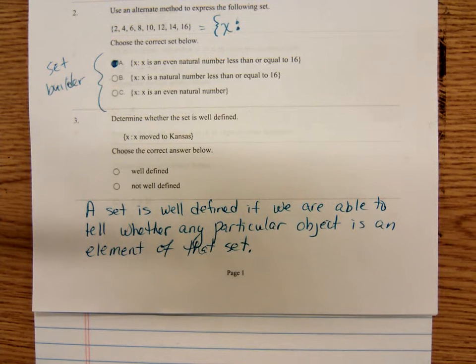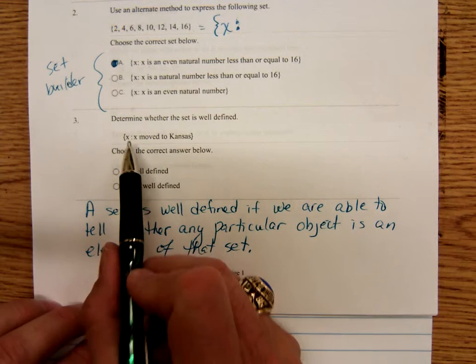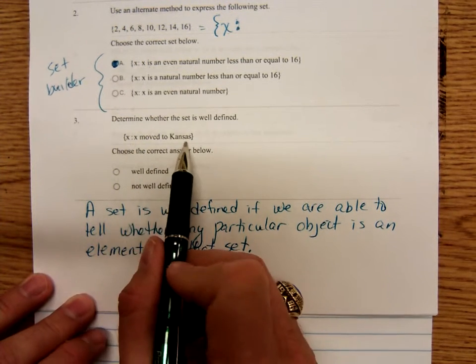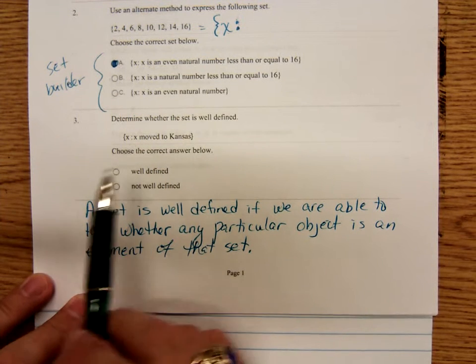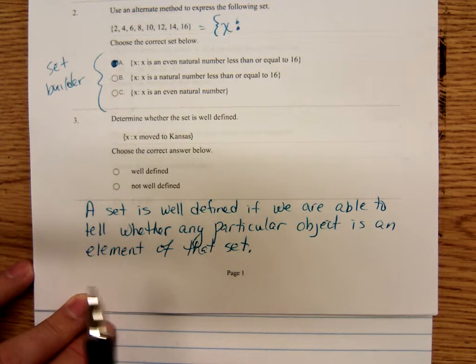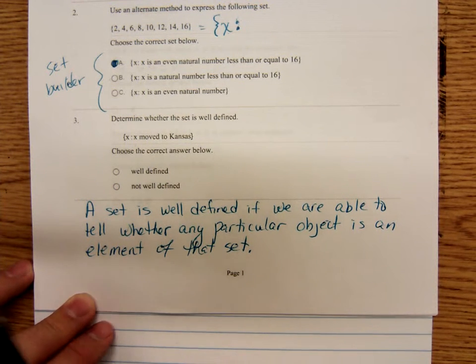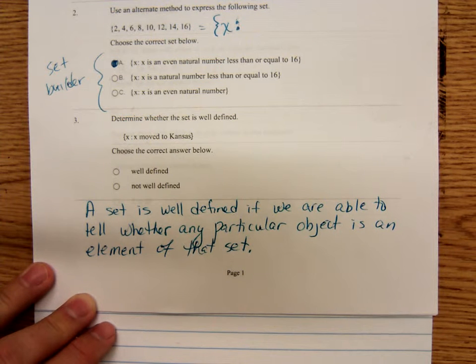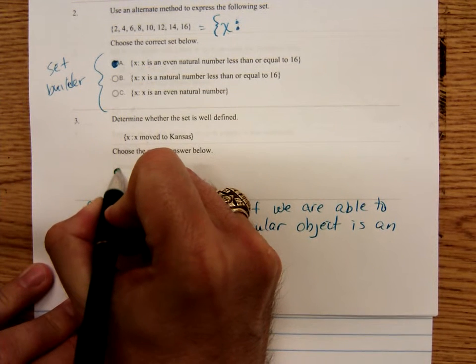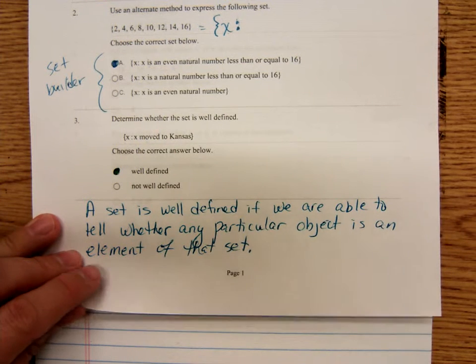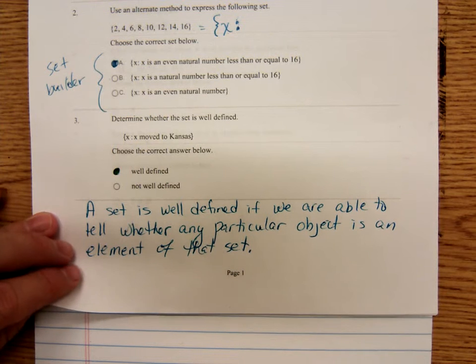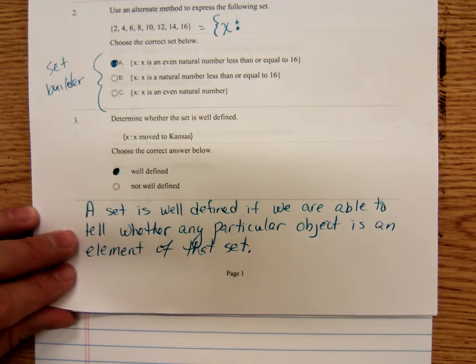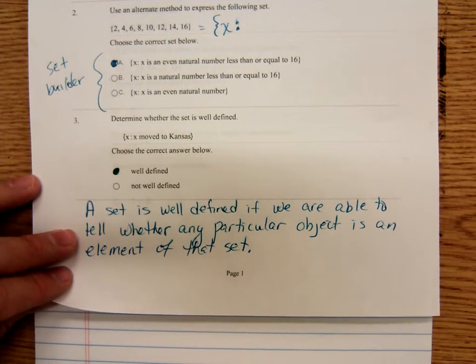So, number three, determine whether this set is well defined. The set of all X such that X moved to Kansas. I guess it sounds like it's talking about people. Well, if you chose any person in particular, could you decide did they move? Are they in this set or not? Did they move to Kansas or not? Well, yes. Either they moved to Kansas or they haven't. This set is well defined. Either a person has moved to Kansas or they haven't moved to Kansas. So that's a well defined set. The set is well defined if we can tell whether any particular object is an element of that set.